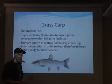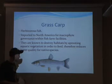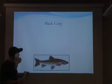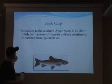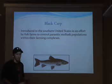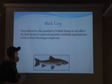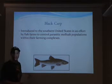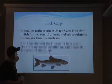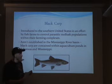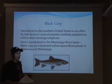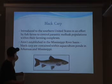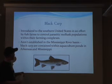Black carp were introduced to the southern United States by fish farms to control parasitic mollusk populations within farming complexes. They are established in the Mississippi River basin and are currently contained within aquaculture ponds in Arkansas and Mississippi.